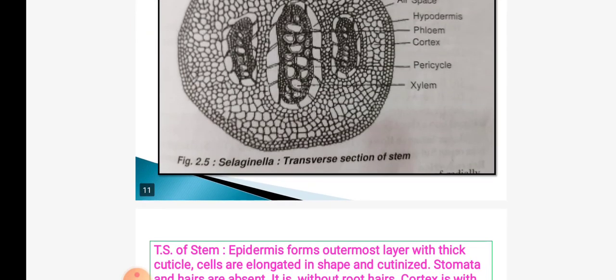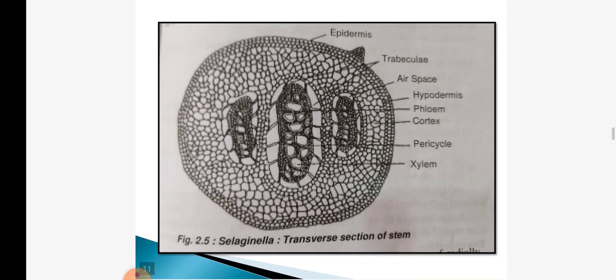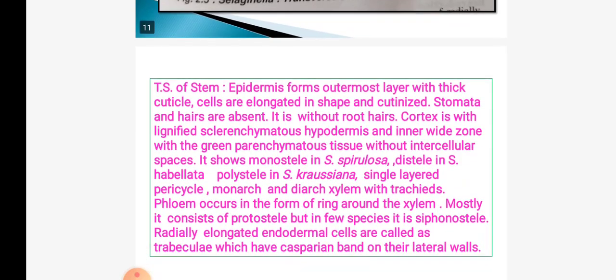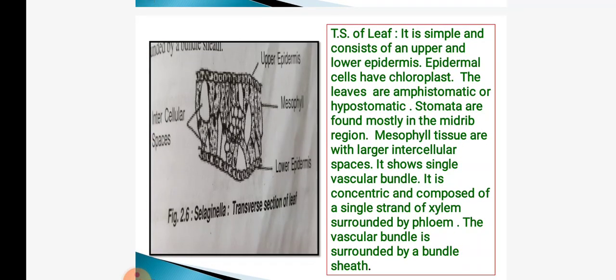See this figure of TS of stem which shows the structure of trabeculae and casparian bands. The anatomical structure of TS of leaf is simple, consisting of upper and lower epidermis. Epidermal cells have chloroplasts. The leaves are amphistomatic or hypostomatic. Stomata are found mostly in the midrib region. Mesophyll tissue is present with intercellular spaces. A single vascular bundle is present and it is concentric and spherical, composed of a single strand of xylem surrounded by phloem. The vascular bundle is surrounded by a bundle sheath cell — this is a peculiar character in the TS of leaf.